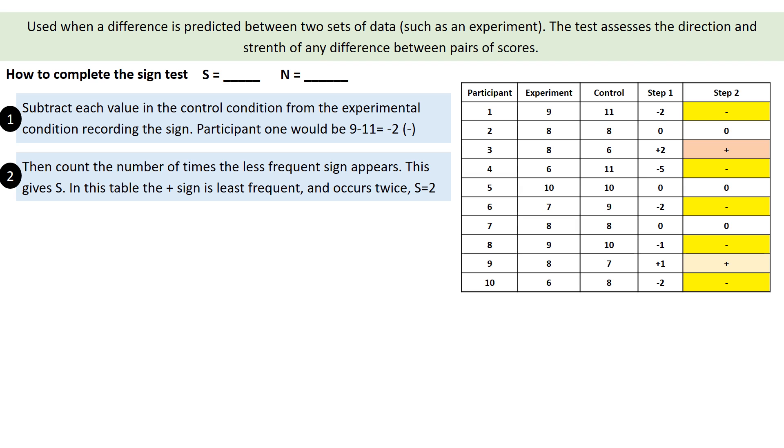Just so I can show you visually, that is step one. You see, nice and easy, just addition and subtraction. And then I've highlighted the different signs. You can see we've got one, two, three, four, five minuses, so it certainly isn't minus. And we have one, two positives, so the least frequent sign, our S, is two.